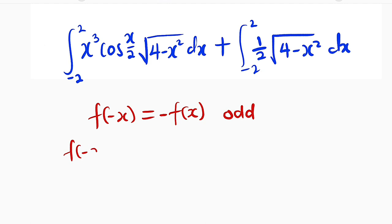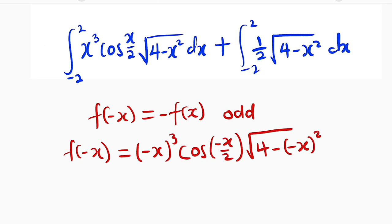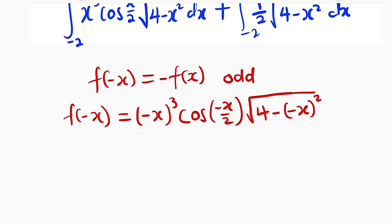So f of negative x equal to, we have x to the power of 3 here. So this is negative x to the power of 3 multiply by cosine of negative x over 2. Then multiply by the square root of 4 minus negative x to the power of 2. Negative x to the power of 3 is equal to negative x³.